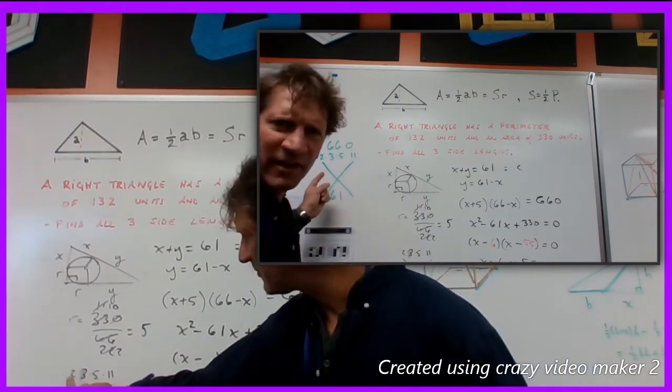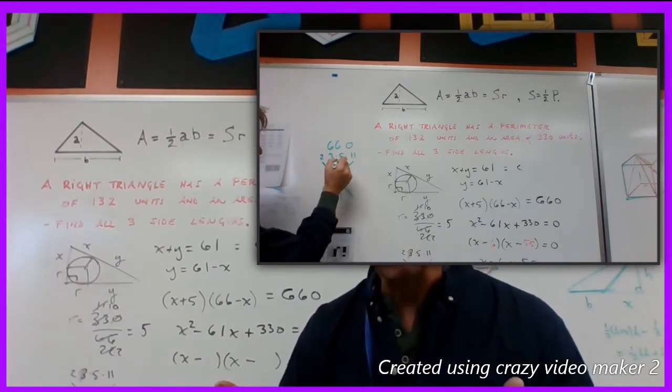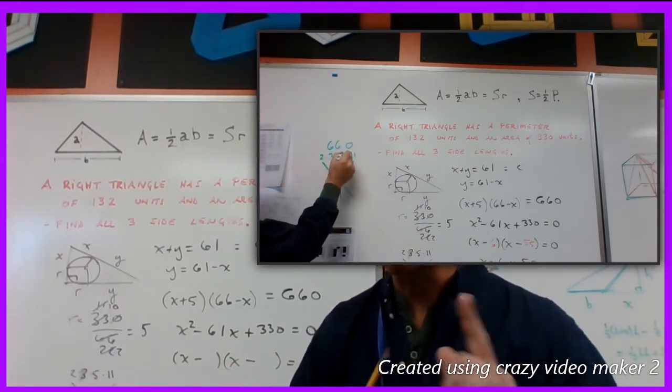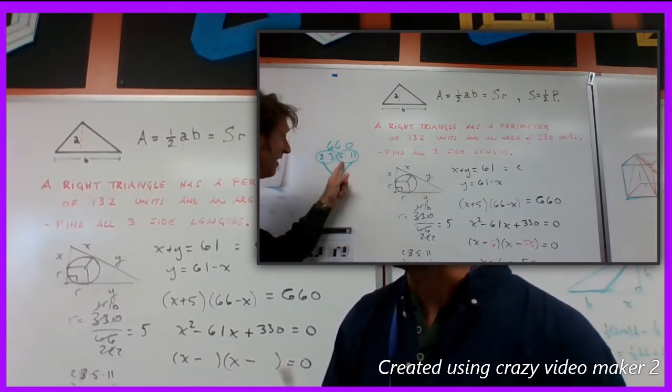2, 3, 5, and 11. Is that actually correct? 2 x 5 is 10. 3 x 11 is 33. 10 x 33 is 330. Those are all prime numbers.